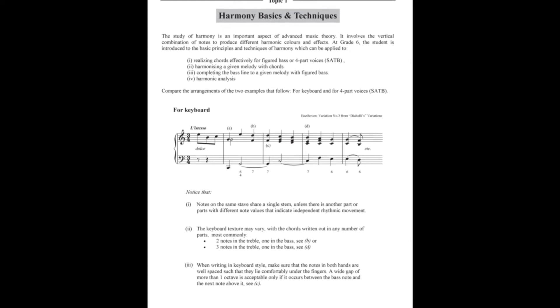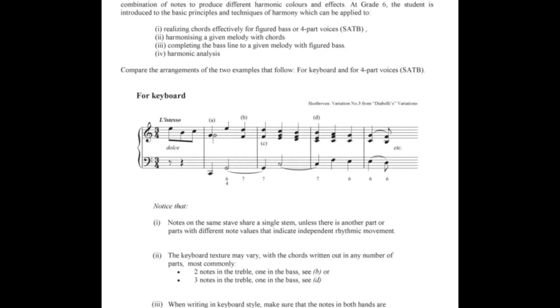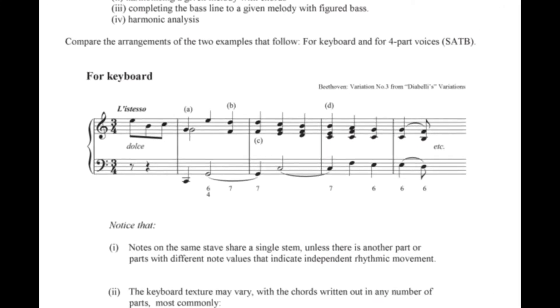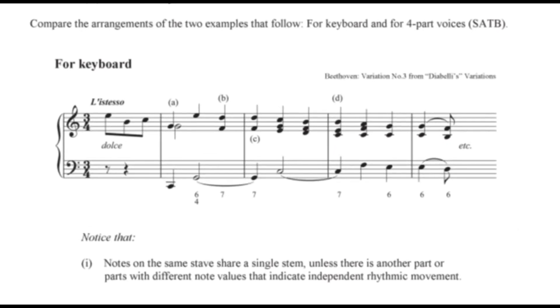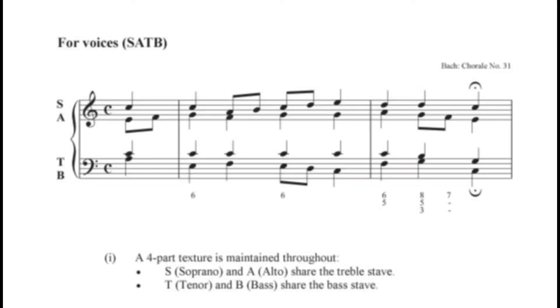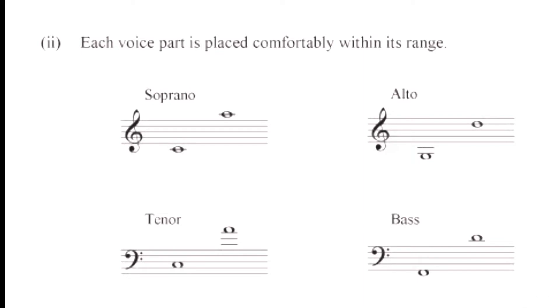In writing out chords, one can use either the keyboard style or to write for four-part voices, which is soprano, alto, tenor, bass. Here is an example of keyboard style. You can have two, three or more parts in each hand. In writing for keyboard, it is necessary to ensure that the notes are well spaced for the comfort of the hands. In writing for four voices on a short score, soprano and alto would share the treble staff, and tenor and bass would share the bass staff. The soprano and tenor voices would have up stems, and the alto and bass voices would have down stems.